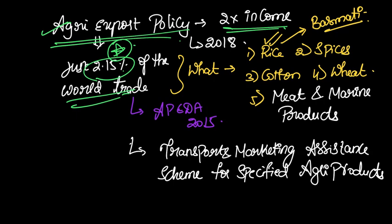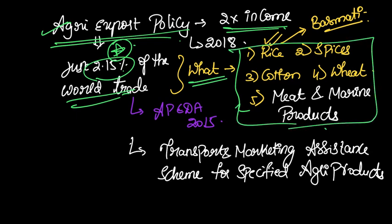Despite being one of the most agro-diverse countries or agro-diverse lands across the world, we just produce 2.15 percent of the world trade's value. So in 2018, we came up with an Agri-Export Policy which had an objective of doubling farmers' income. The point that you have to note is: what are the agricultural commodities which have highest exports and export value? Just go through these products: rice, especially the Basmati rice. That is why we have been competing with Pakistan for certain Basmati varieties' GI tag as well, because it gives us more value.